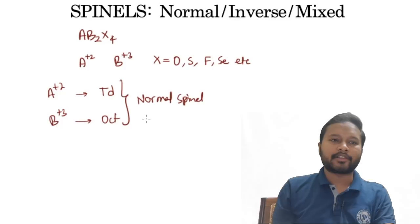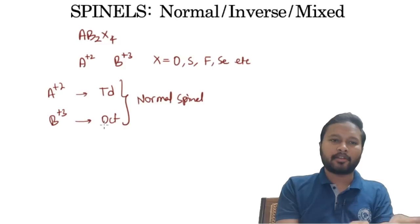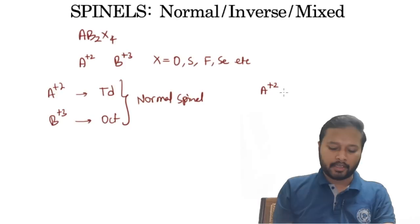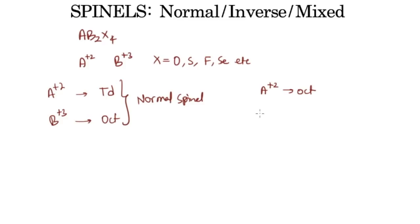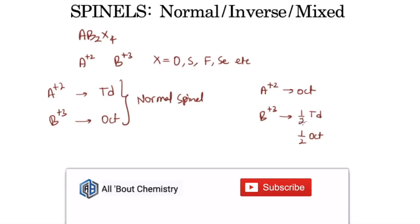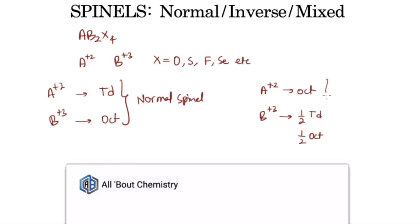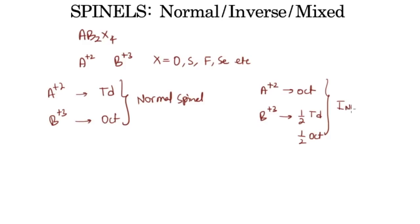In an inverse spinel, the arrangement is similar but not exactly opposite. The dipositive cation A²⁺ goes into the octahedral voids, while the tripositive cation B³⁺ splits — half goes into the tetrahedral voids and half goes into the octahedral voids. Since you have two moles of B, half a mole goes to each void type.